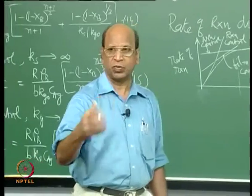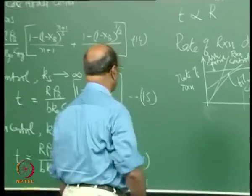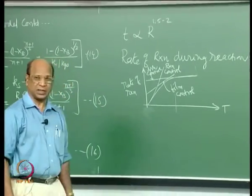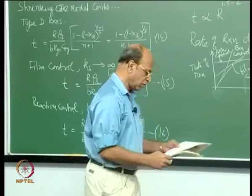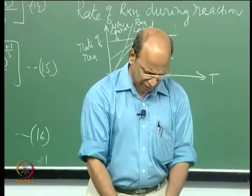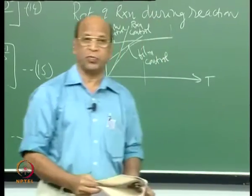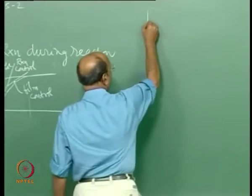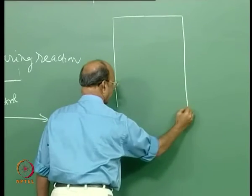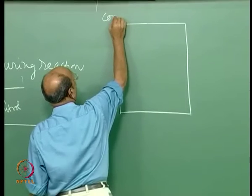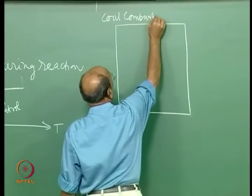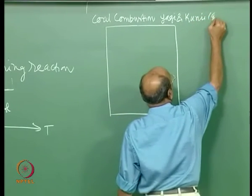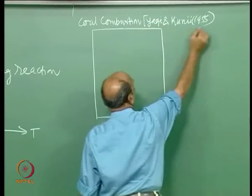For a truly homogeneous model we will need to derive different equations, but let me finish everything about the shrinking core model first. Based on this, the first paper doing systematic studies on coal combustion was done by Iaggi and Kuni in Japan, very beautifully and systematically, in 1955 — before most of you were even born.